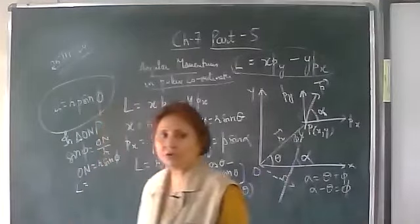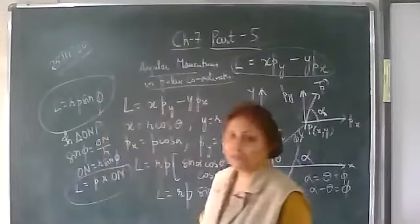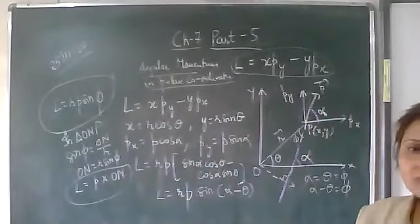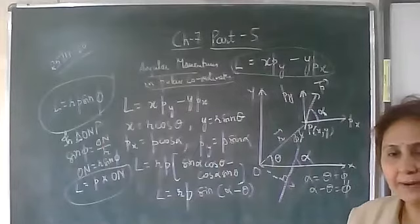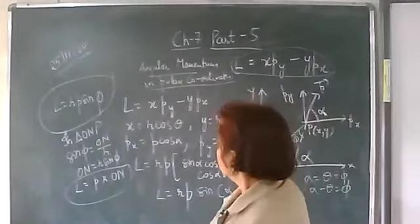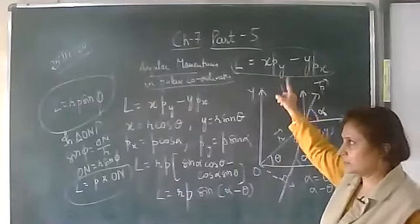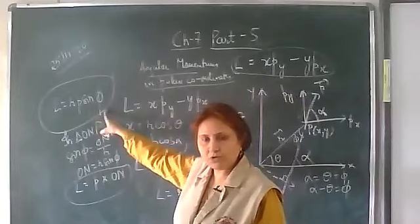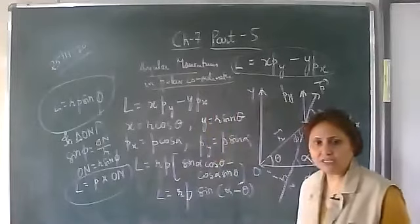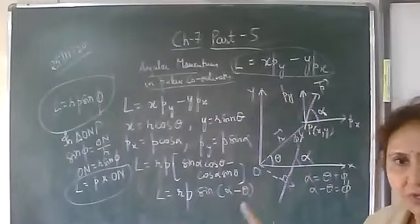So what do we get? L is equal to the linear momentum into the perpendicular distance. As we define, the angular momentum is equal to the linear momentum into the perpendicular distance from the axis of rotation. This is the angular momentum in Cartesian coordinates, this is the angular momentum in polar coordinates, and as we defined, angular momentum equals linear momentum into perpendicular distance from the axis of rotation. These three formulas.